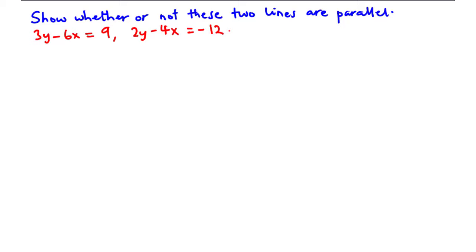In today's video, we are going to look at parallel and perpendicular lines and the difference between the two. Now let's start off with parallel lines. Two lines are said to be parallel if they have the same gradient, so that the gradient of line A is the same as the gradient of line B.